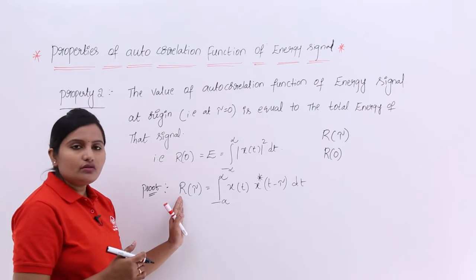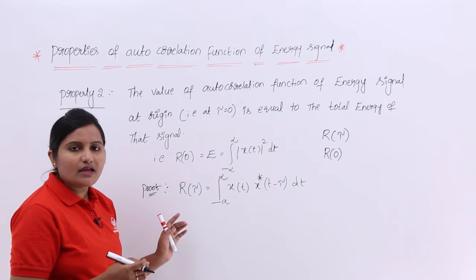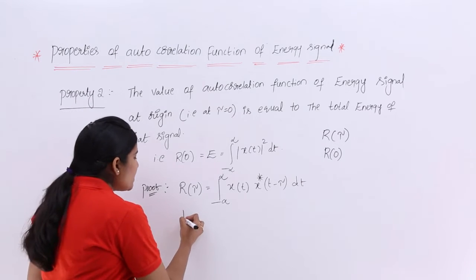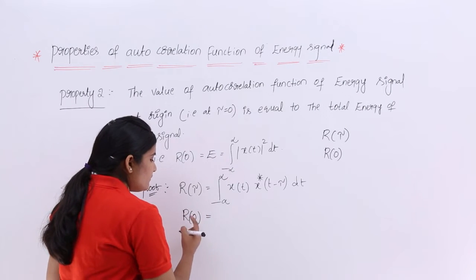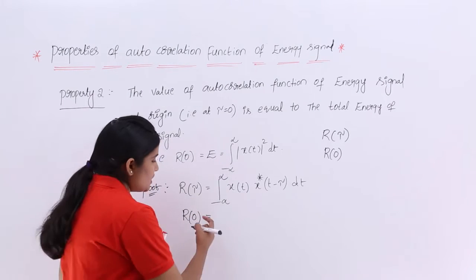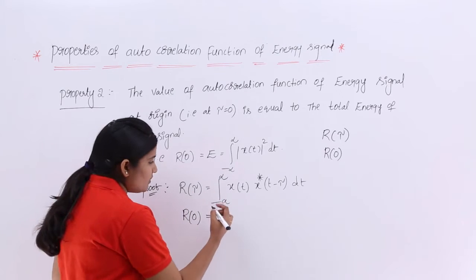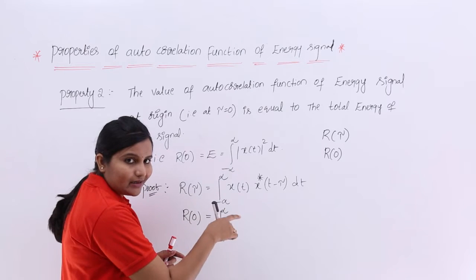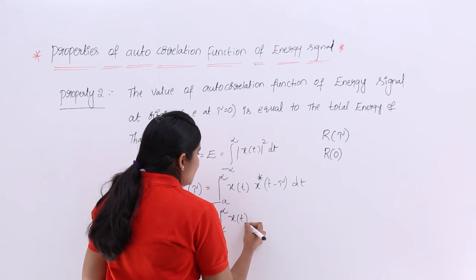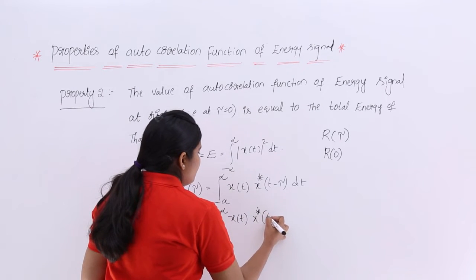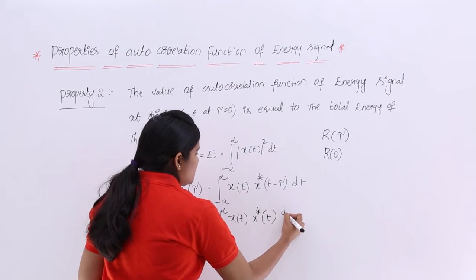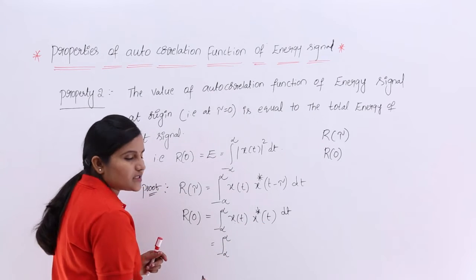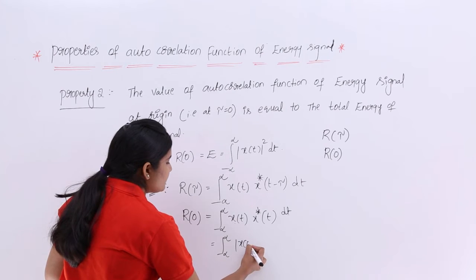Now I want to find the value for R(0), that is the value of this autocorrelation function at the origin. I want to show that the autocorrelation function at origin is equivalent to energy. That is why I am substituting τ equal to 0. When I substitute τ equal to 0, that gives the value of the autocorrelation function at origin. Wherever you see τ, put 0 — so t minus 0 is just t. This gives integral from minus infinity to infinity of x(t) times x*(t), which you can write as the modulus of x(t) whole squared, dt.